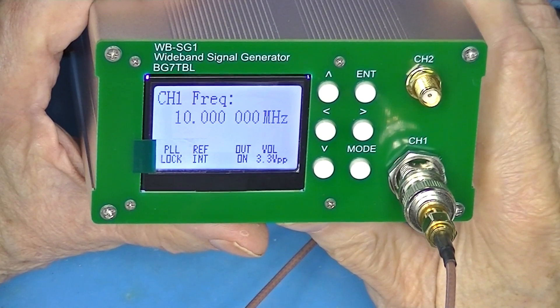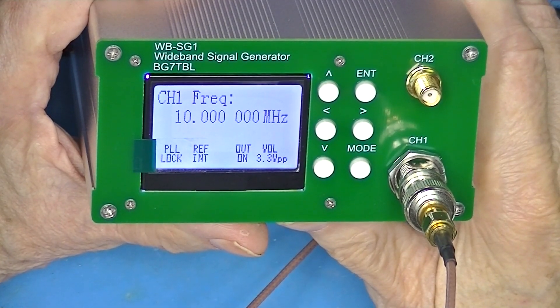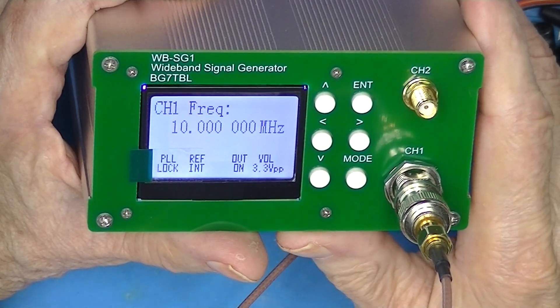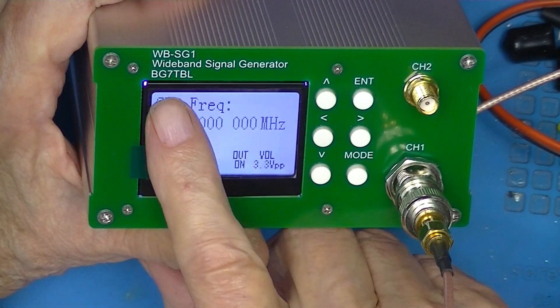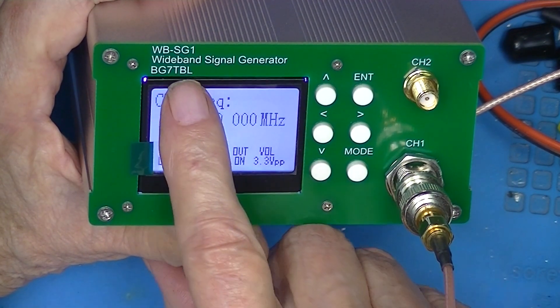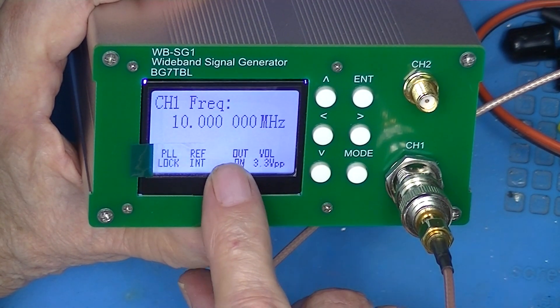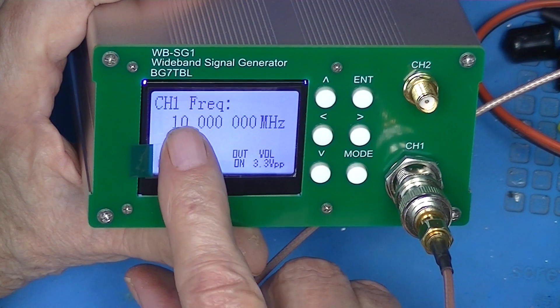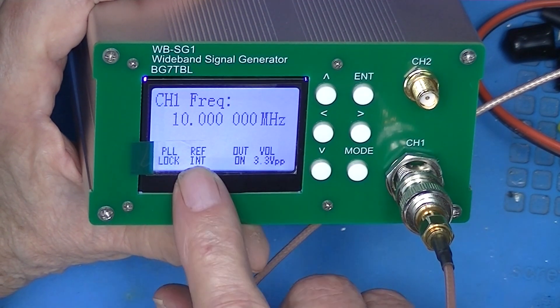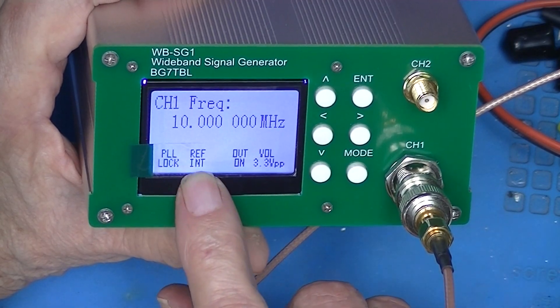Last week I had a scheduled hospital stay, so I powered this BG7 TBL signal generator up and set it for 10 megahertz on channel 1. There is no external reference connected.